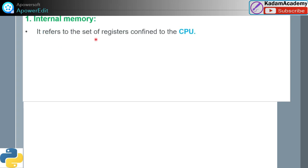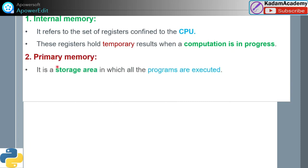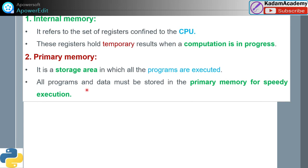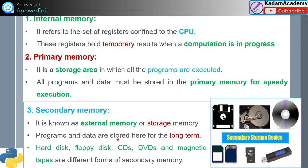Internal memory refers to the state of registers confined to the CPU. These registers hold temporary results when computation is in progress. Primary memory is the main storage area in which all programs are executed — programs and data must be stored in primary memory for speedy execution. Secondary memory, also known as external or storage memory, stores programs and data long-term. Examples include hard disks, CDs, DVDs, and magnetic tapes.